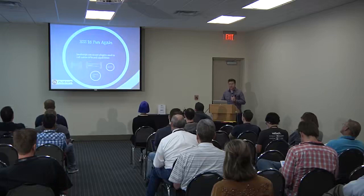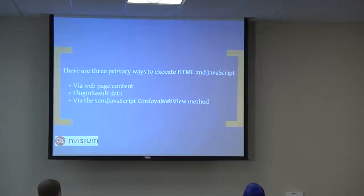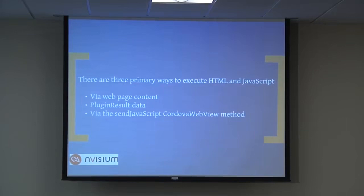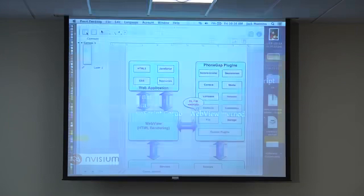XSS is fun again with PhoneGap. There are three primary ways to achieve script and HTML execution in the application. The first is through served content — standard XSS: untrusted data gets rendered back on the page, the page can't distinguish data from code, your code fires, you win. The second vector is through the plugin result itself.